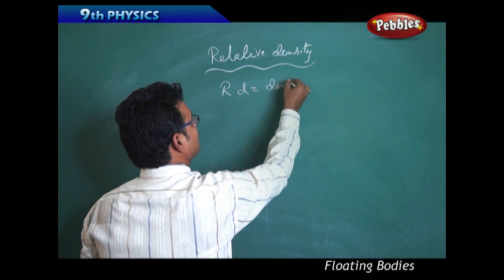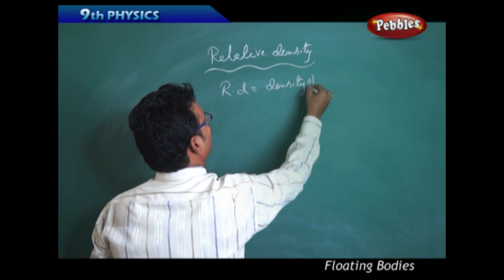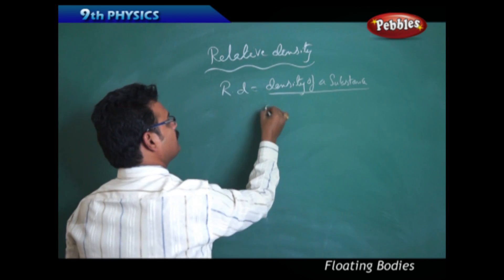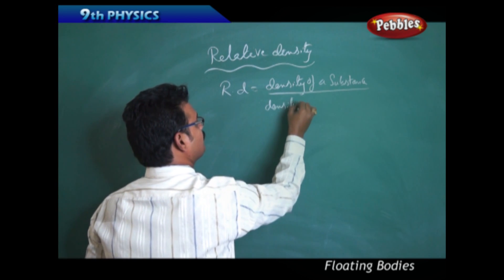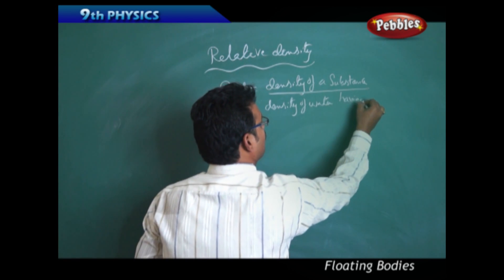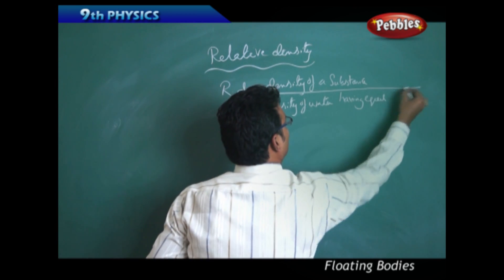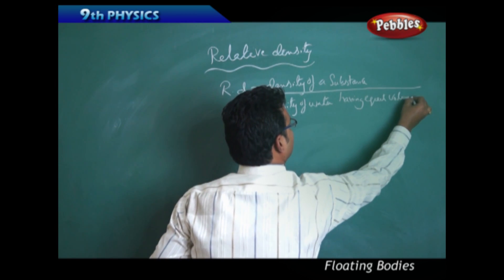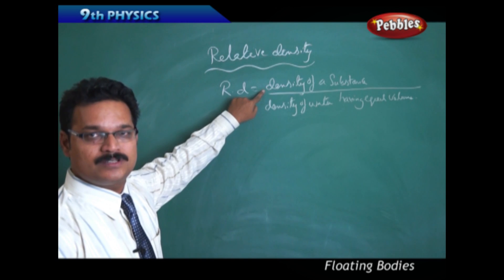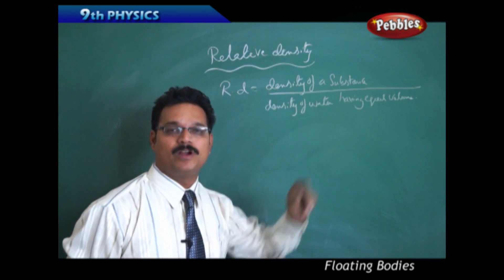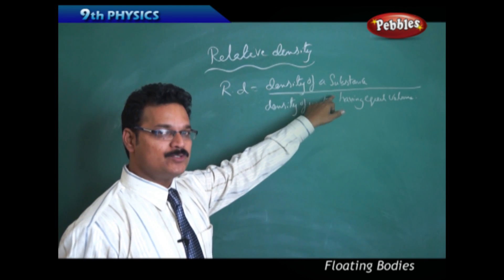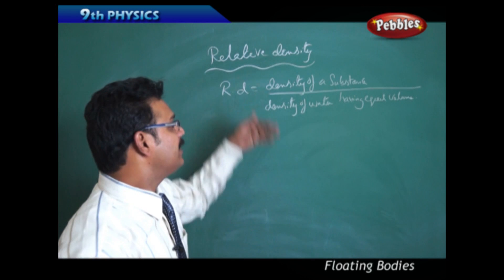Relative density — what does 'relative' mean? It means comparing. Relative density equals the density of a substance divided by the density of water having equal volume. That condition is very important. Relative density is the ratio of the density of a substance to the density of water having equal volume.